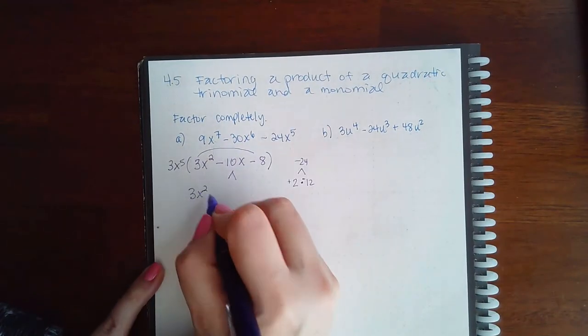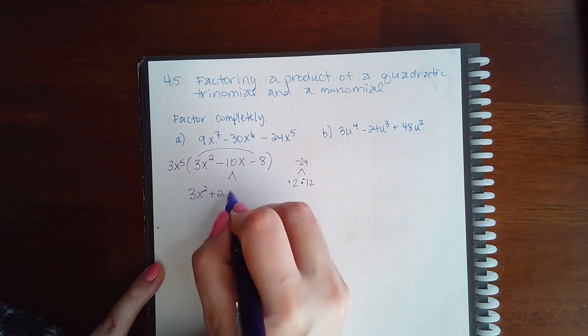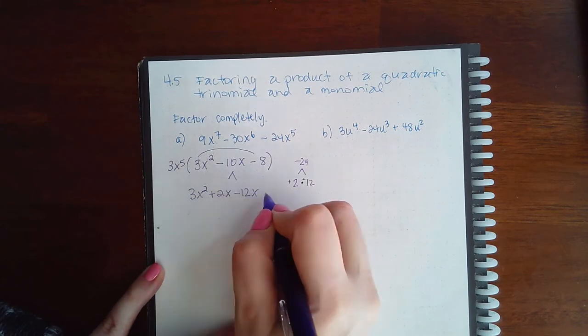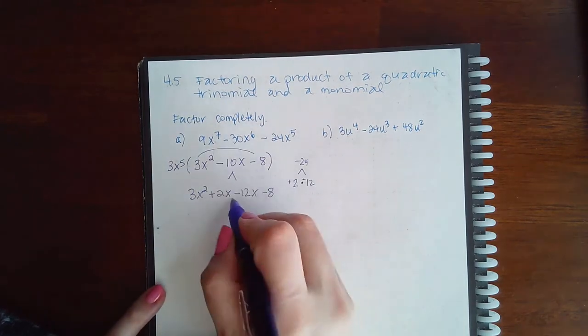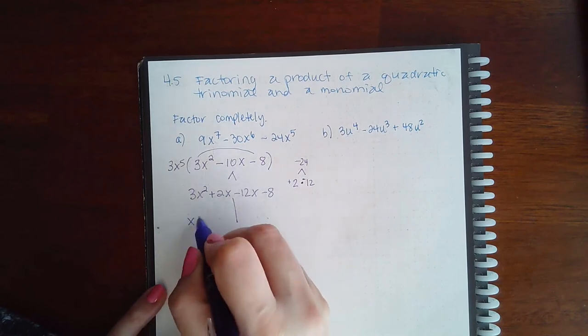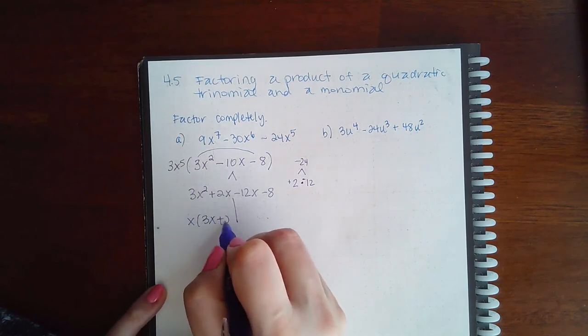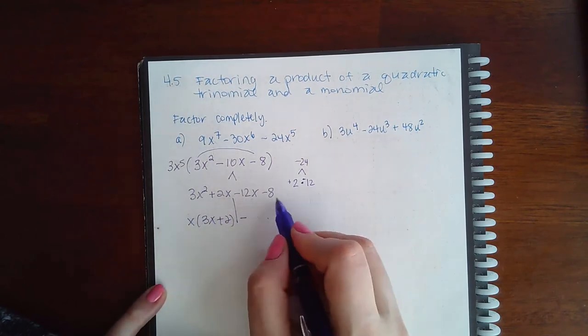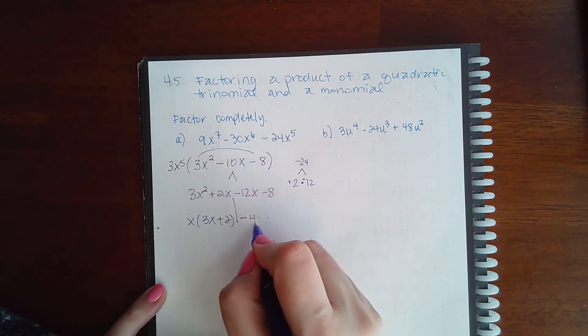So it should have been 3x squared plus 2x minus 12x minus 8. There we go. Now we cut in half, factor out the x this side has in common, bring down the minus, factor out a 4 that this side has in common.